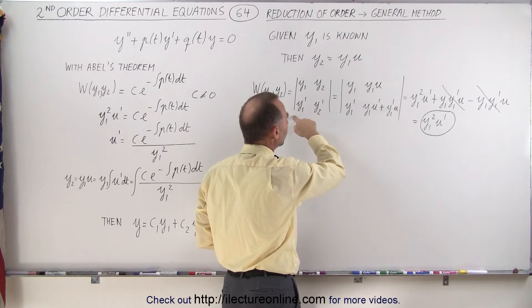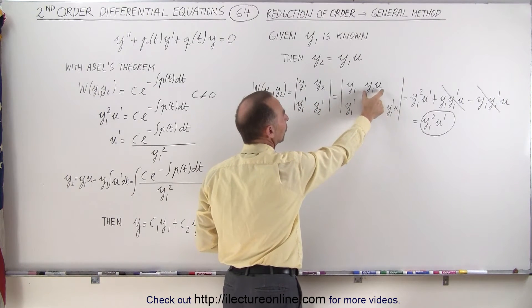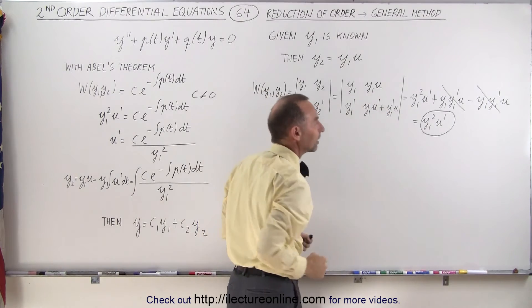On the second row, these are the derivatives of y1 and y2, and since y2 is a product of y1 and u, this is what the derivative looks like.